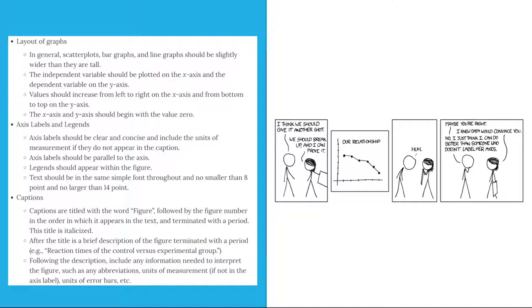Axis labels and legends. Axis labels should be clear and concise and include the units of measurement if they don't appear in the caption. Axis labels should be parallel to the axis, legends should appear within the figure, and text should be in the same simple font throughout and no smaller than 8-point and no larger than 14-point.